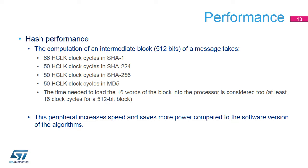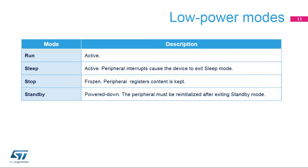The main benefit of using a hardware accelerator is to increase speed and save power compared to a full software implementation of the hash functions. Here is an overview of the status of the hash processor in each of the low power modes. Hash operations are not possible when the device is in stop mode.